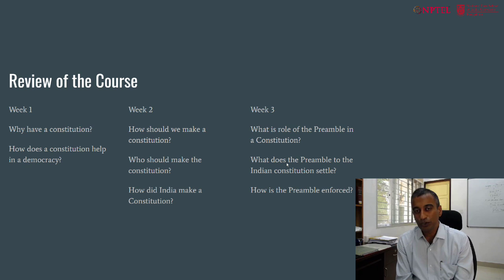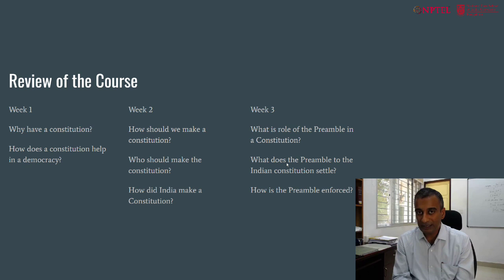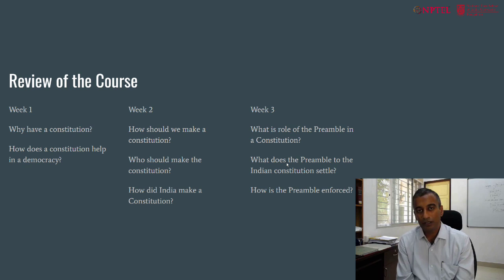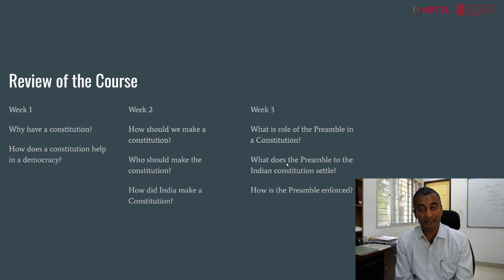In week 2 we asked how should we make a Constitution? Assuming that a Constitution is useful, how should we make it? Should we adopt the best format we find in the world, or do we make a Constitution specifically suited to the society in which we live? Who should make it — experts or representatives? This is particularly relevant for the Indian Constitution, which was made by a special representative assembly that was diverse and uniquely representative of the Indian people at large.